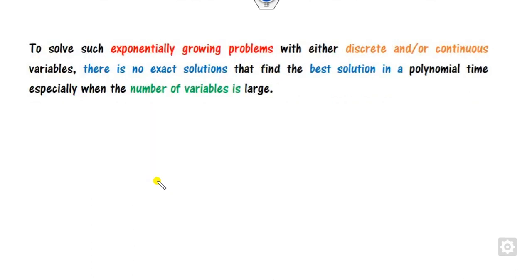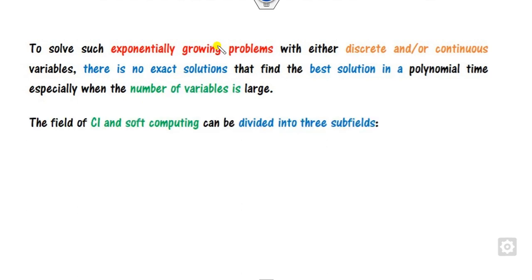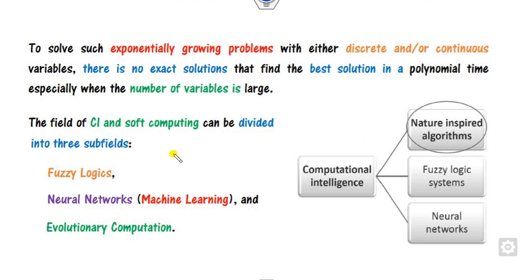How can we overcome that? For exponentially growing problems, whether discrete or continuous, there is no exact solution because whenever the variables increase, you are unable to find the best possible solution. In order to overcome this, computational intelligence or soft computing techniques are useful. This is basically divided into three portions: fuzzy logic, neural networks, and evolutionary computation, also called nature-inspired algorithms.